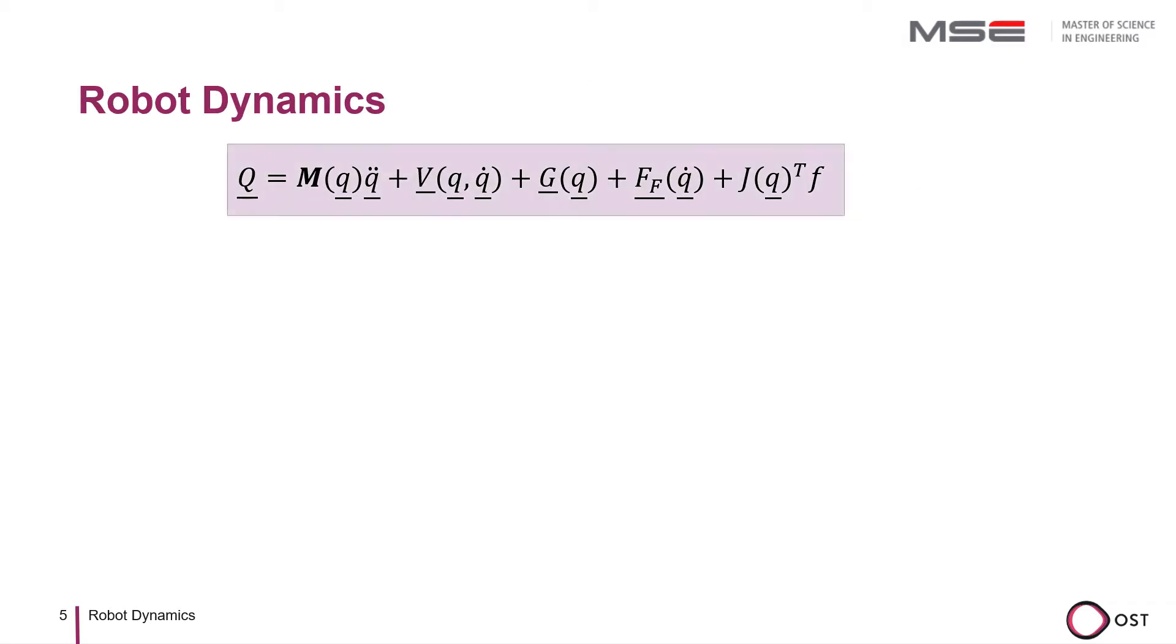Based on the considerations presented, I would like to show and explain the general dynamic equation of the dynamics of robots. The parameters and terms of this equation have the following meanings.